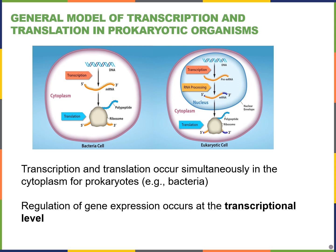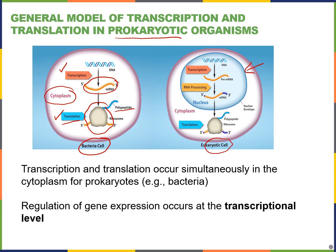We learned in chapter 15 that transcription and translation occur differently in prokaryotes versus eukaryotes. In prokaryotes like bacteria, there is no nucleus, so everything happens in the cytoplasm — both transcription and translation. As soon as messenger RNA is produced, ribosomes can bind and begin translation into a polypeptide. In eukaryotes, because of the nucleus, transcription and translation are separated: first DNA is made into mRNA, then that mRNA is shuttled to the cytoplasm before translation can occur. This process of going from DNA to messenger RNA to protein is called gene expression.